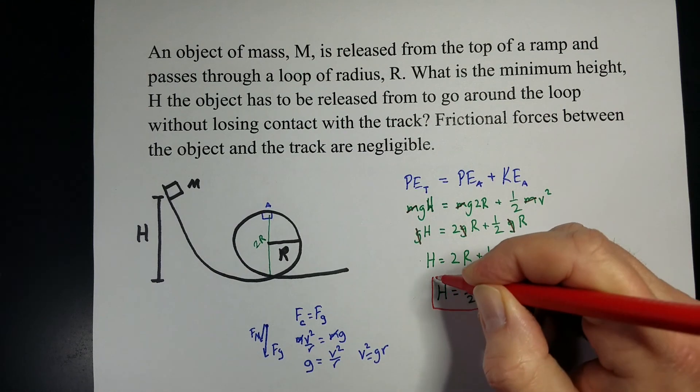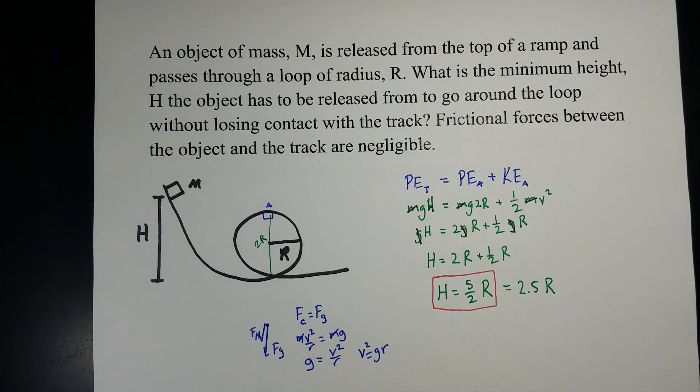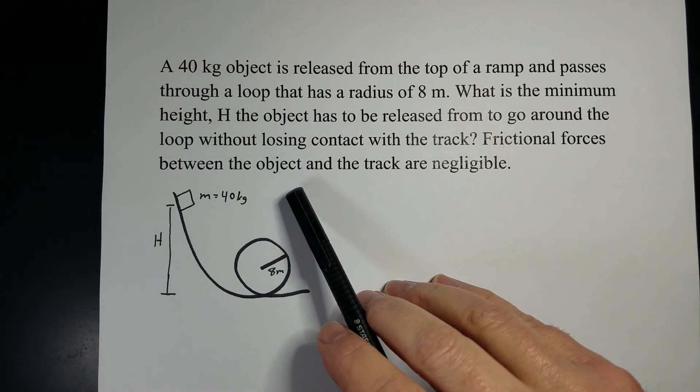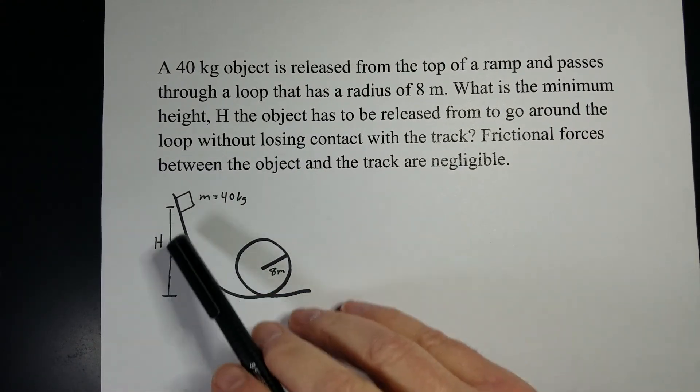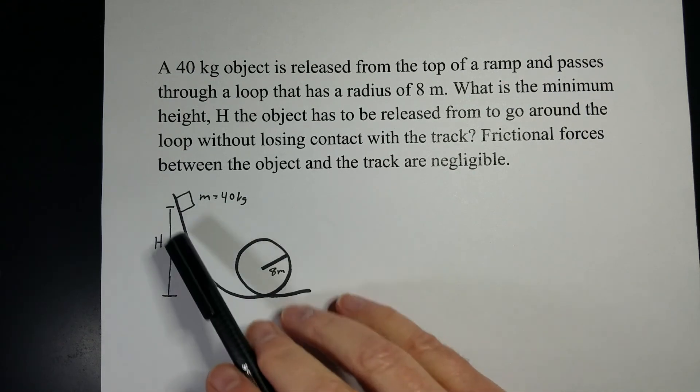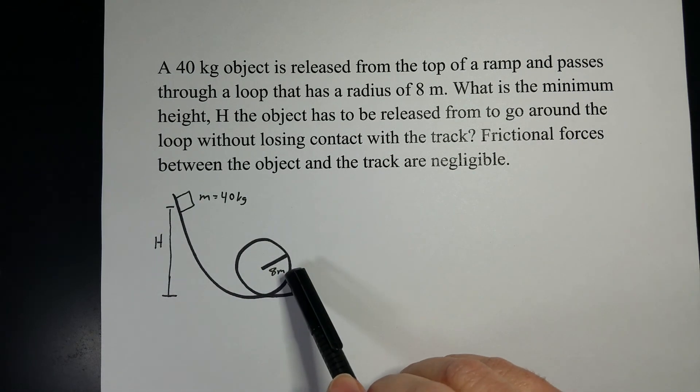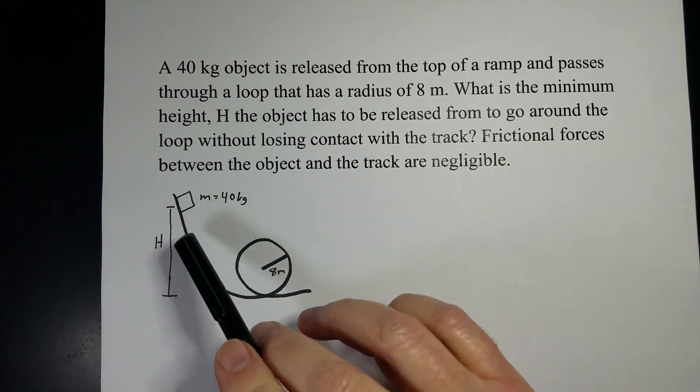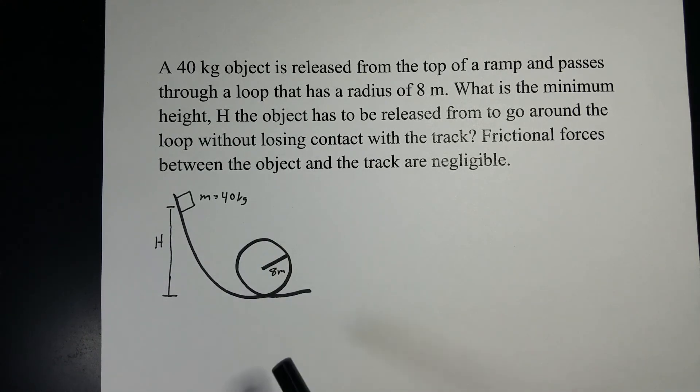Finding the height that we need to drop it from is equal to that. So, what if we actually have numbers? Let's give it a try. Okay, in this example, our object is 40kg, still dropped from a height h, we still want to figure that out. The radius of the hoop is 8, and we want to figure out the minimum height we can drop it from for it to make it all the way through that loop.